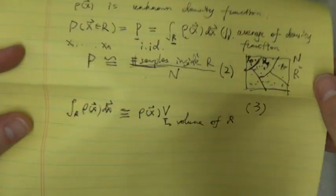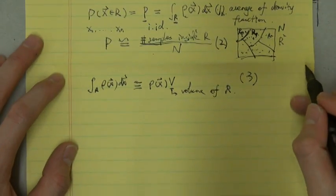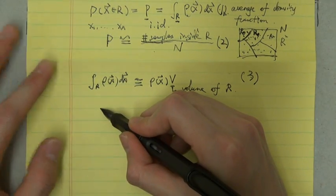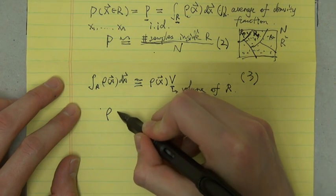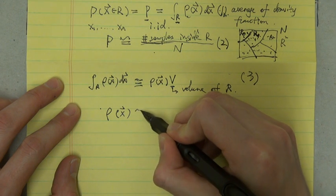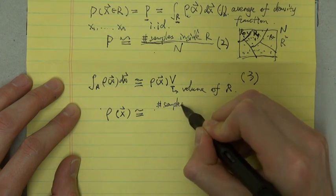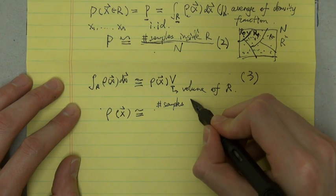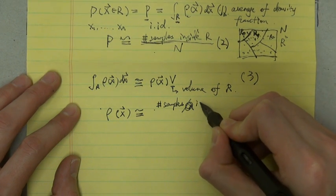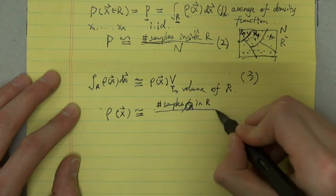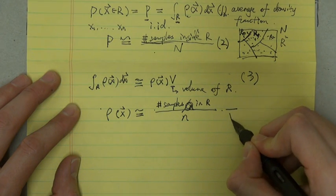So now if we combine these three equations, 1, 2, and 3, we can get approximately ρ(x⃗) is approximately the number of samples in R divided by the total number of samples n and then divided by the volume of R.